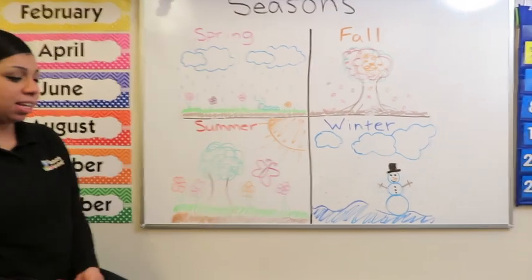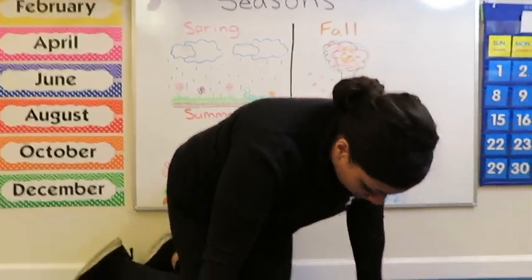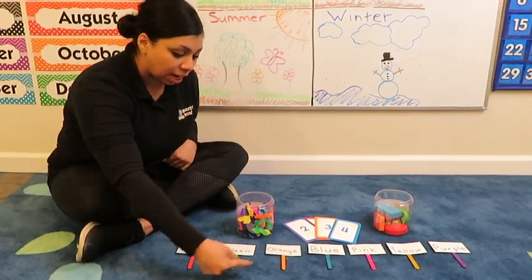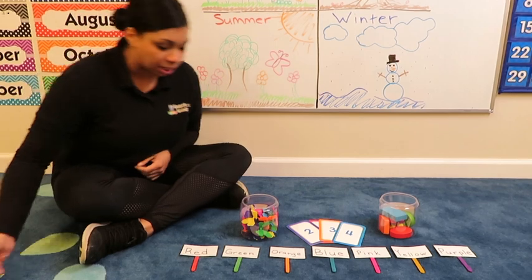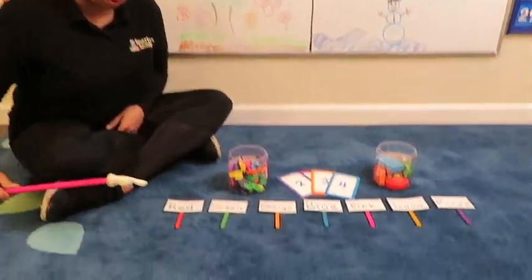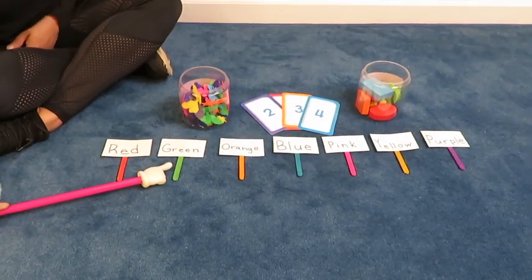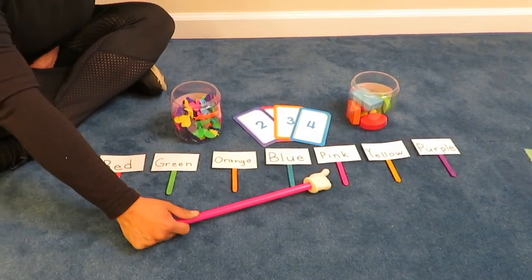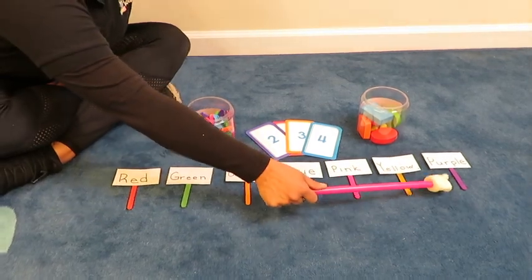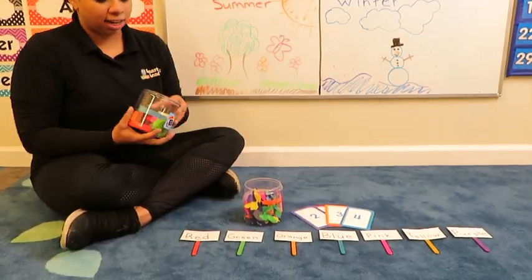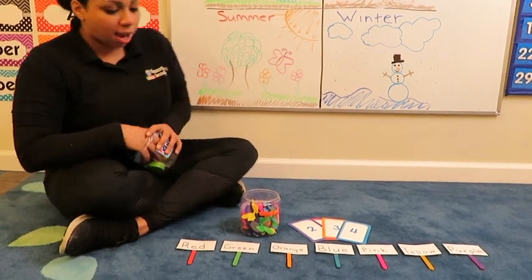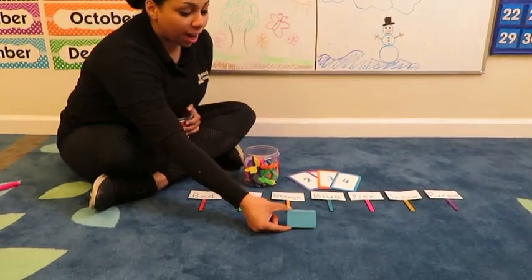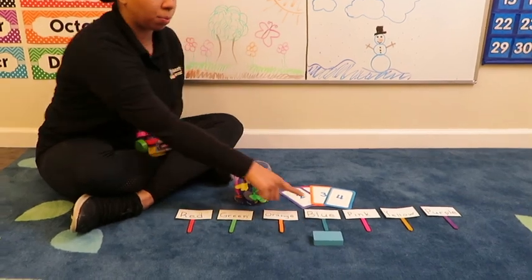So let's move on to a little game here on our circle time carpet. Okay, friends. I have some fun toys that we can use, and I have our little signs that tell us all the different colors. Let's go over all the colors we have here first: red, green, orange, blue, pink, yellow, and purple. I have some things here and make sure you can sort out the colors that we have. Here's our first shape. What color is our shape? This rectangle is blue, so I'm going to put it under the blue.